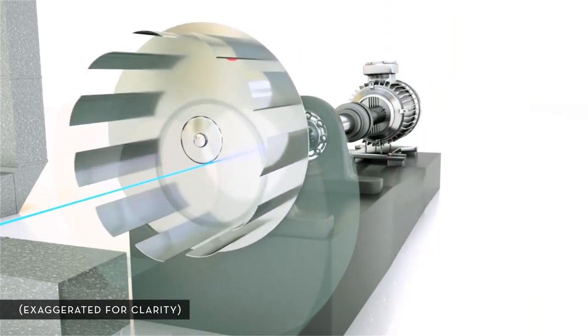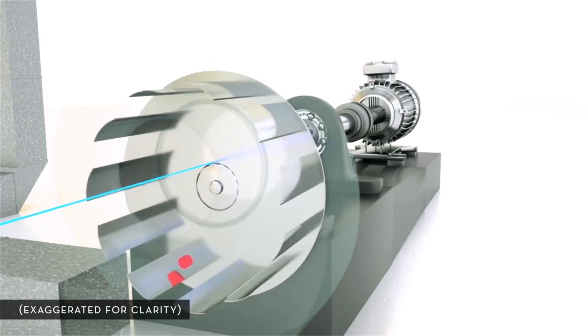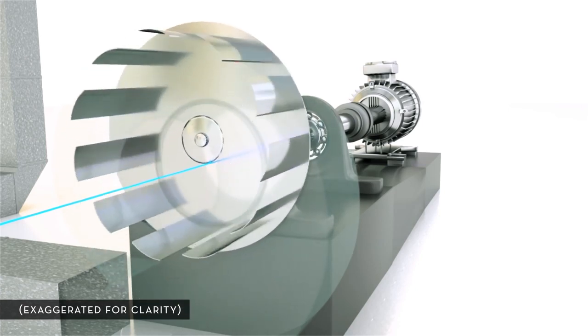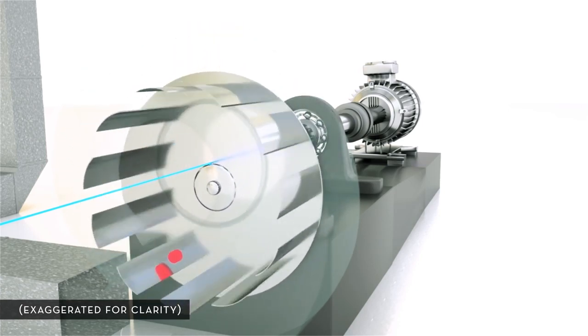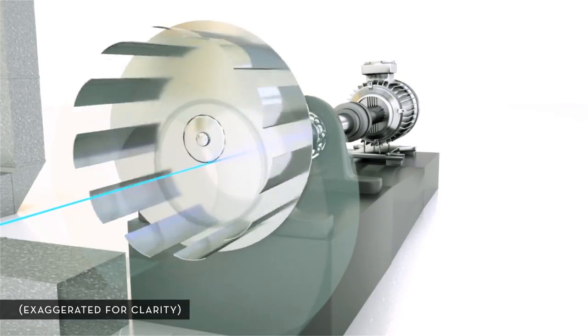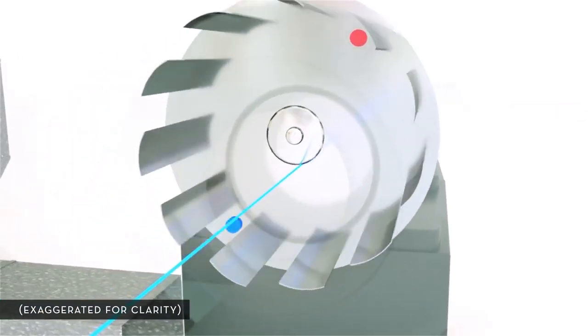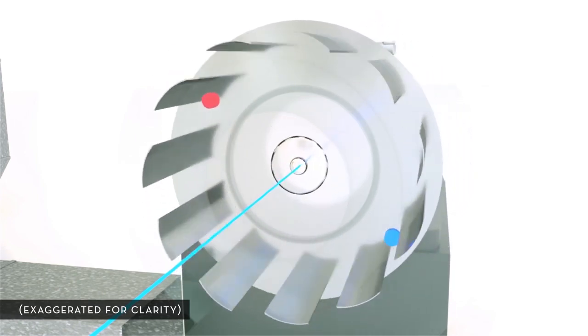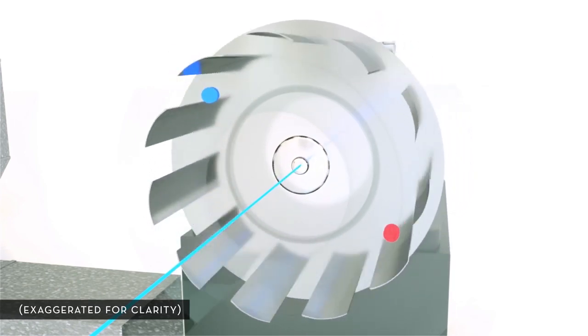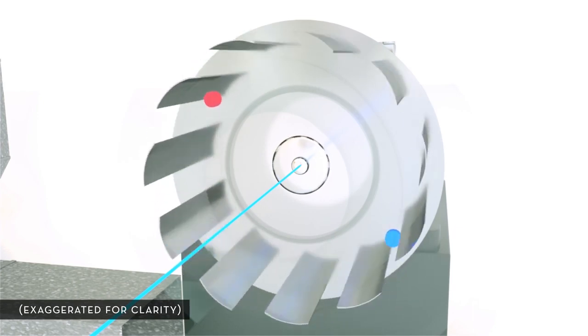Similar to the process an auto mechanic employs to speed balance the tires of a car, rotating machinery is balanced by either adding weight to the light spot or removing weight from the heavy spot. In this illustration, we will add weight to counterbalance the heavy spot so that mass is evenly distributed around the axis of rotation.